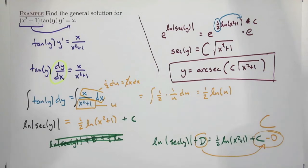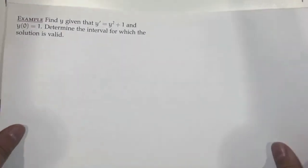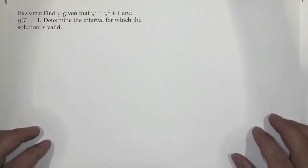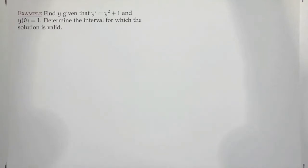Let's try another one. Find y, given that y' = y²+1 and y(0) = 1. Then determine the interval for which the solution is valid.